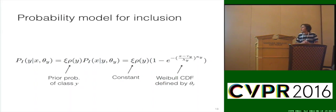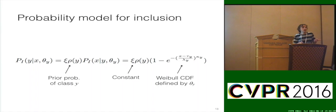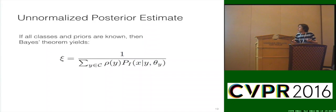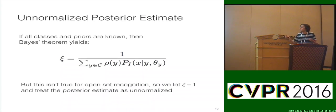We can think of this in a Bayesian context. We may have some prior probability of a known class, some constant applied to this, and then we multiply all of that by the Weibull CDF defined by those parameters from our fitting. We train the model, fit the probability model on top, and then use this formulation to get a probability which we threshold to make our decision. One thing to note: we're using unnormalized posterior estimates, because if all classes and priors were known, Bayes' theorem would yield a nice equation. But that's not true for open set recognition because we don't know all classes and priors — so we set that term to one.